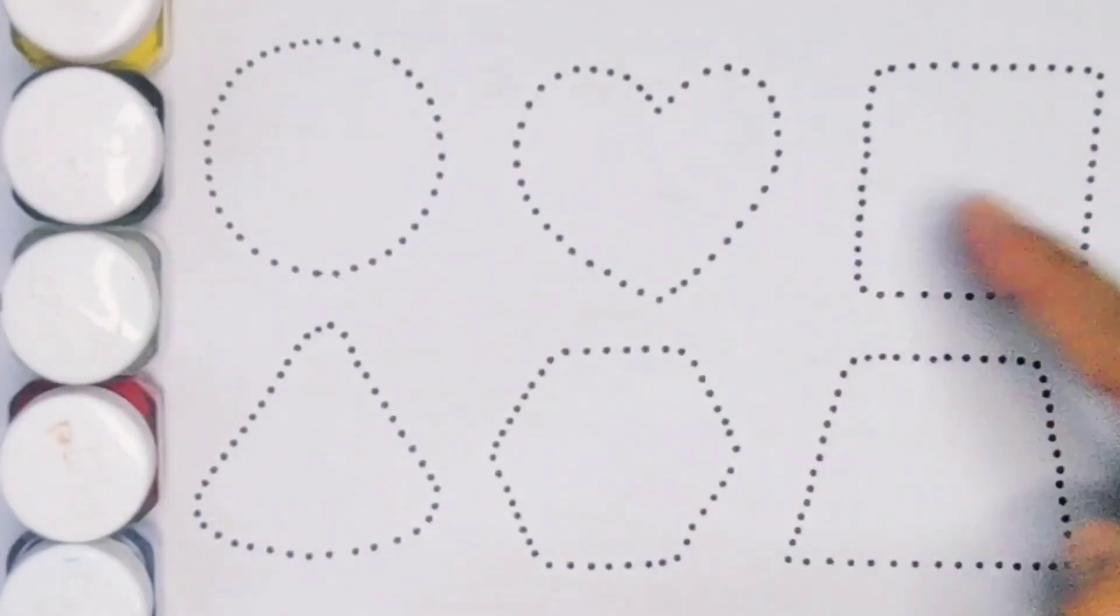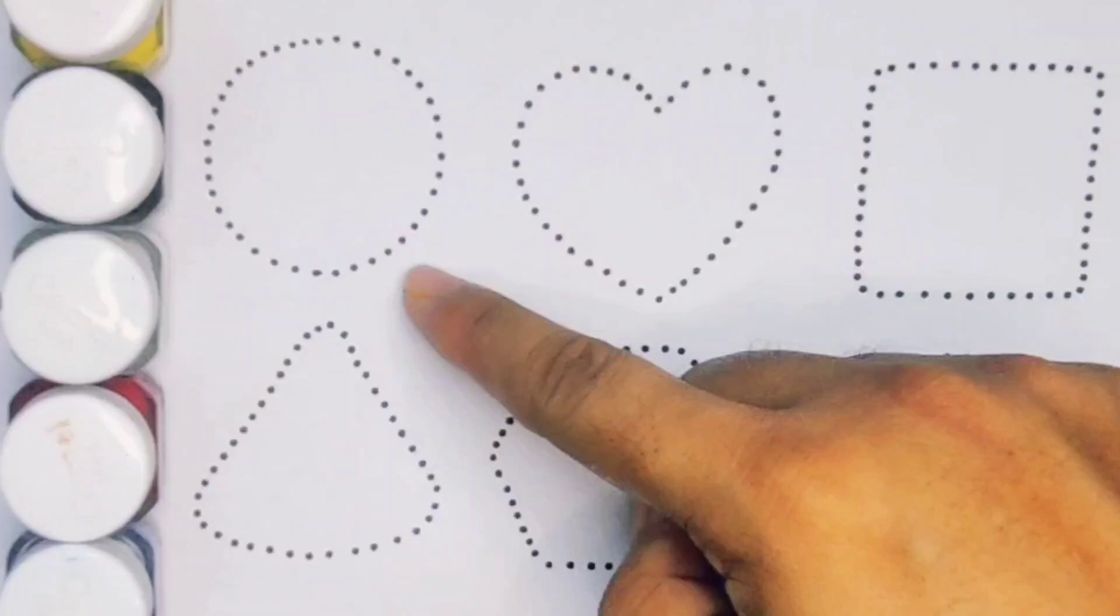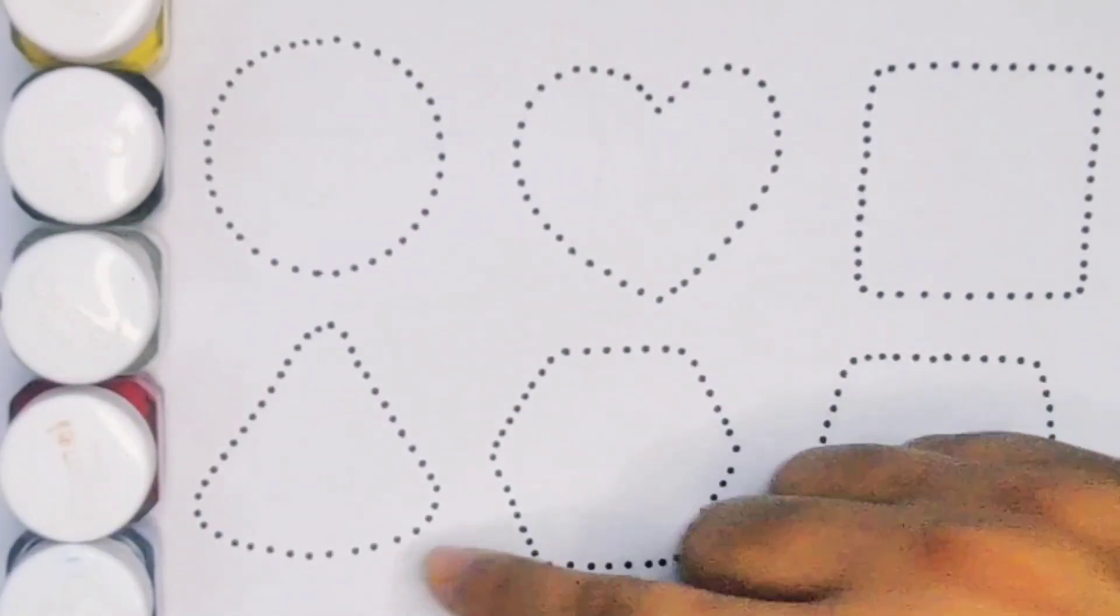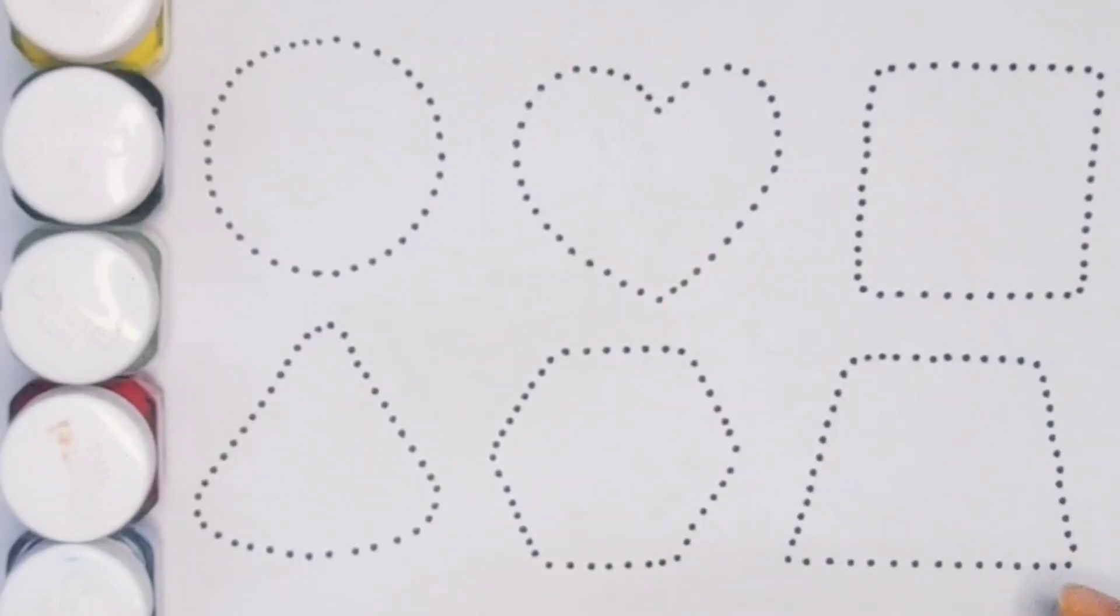Now let's learn the 2D shapes. Circle, heart, square, triangle, hexagon, and trapezoid.